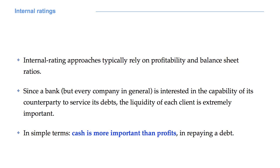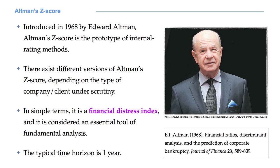The prototype of internal rating methods is represented by Altman's Z-score. Introduced in 1968, the Z-score is a financial distress index, extremely important in fundamental analysis. It is obtained using discriminant analysis, a well-known tool in statistics. There are different versions of Altman's Z-score, depending on the type of company or client under scrutiny.